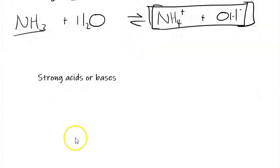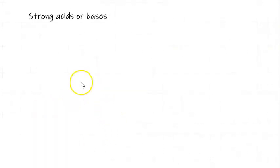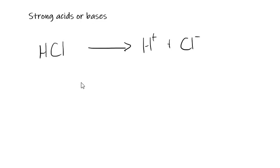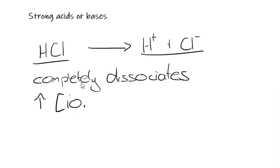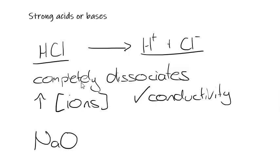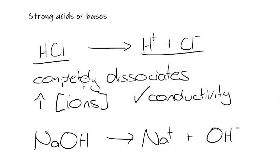What about strong acids and bases? We could have HCl dissociating into H⁺ and Cl⁻. Because HCl completely dissociates, we're going to end up with a high concentration of ions, so there's going to be really good conductivity. The same with sodium hydroxide, or any other strong base — because it completely dissociates into its ions, there's going to be a high concentration of ions, so it'll be a good conductor.